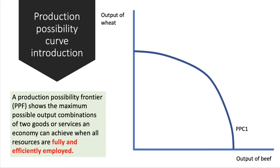So what is a production possibility curve? It's basically a frontier — a diagram showing the maximum possible output combinations of two goods that a country or producer can achieve when all of the available resources are fully and efficiently employed. In this case, we'll look at the output of wheat on the y-axis and the production of beef on the x-axis.